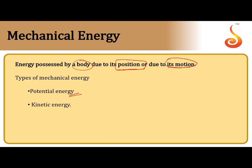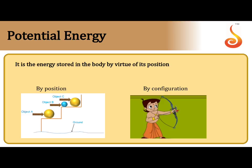Mechanical energy is the energy possessed by a body due to its position or its motion. There are two types of mechanical energy: potential energy and kinetic energy. Potential energy is the energy stored in a body by virtue of its position. For example, an object at height H1 and another at height H2 from the ground have different positions, so they possess different amounts of potential energy.